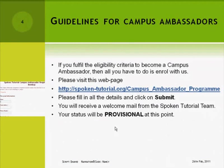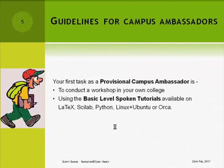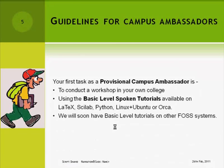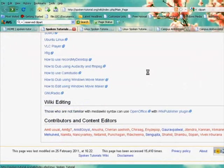Your status will be provisional at this point. Your first task as a provisional campus ambassador is to conduct a workshop in your own college using the basic level spoken tutorials available on LaTeX, Scilab, Python, Linux and Ubuntu, or Orca. We will soon have basic level tutorials on other FOSS systems. Here is a list of all the FOSS that we are currently working on.